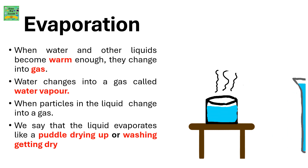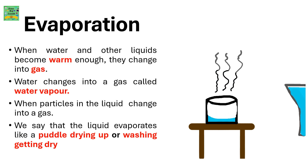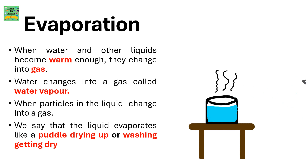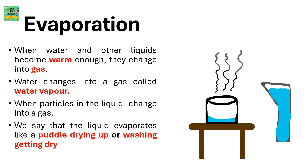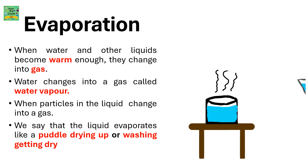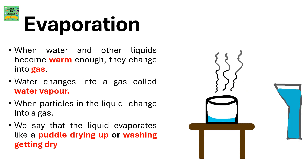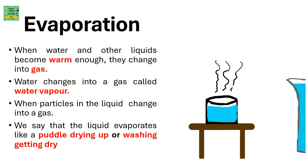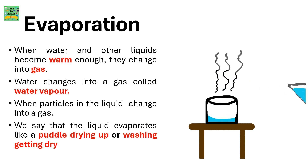When water and other liquids become warm enough, they change into gas. For example, when you heat water, water vapors evaporate — in short, the water becomes gas. When particles in the liquid change into gas, we say that the liquid evaporates, like a puddle drying up or washed clothes getting dry.